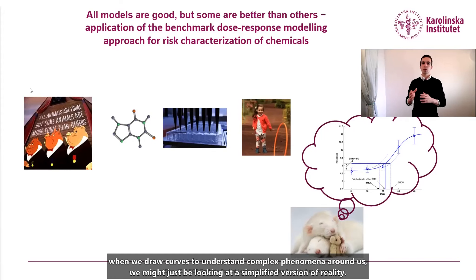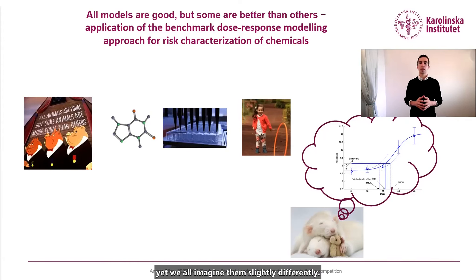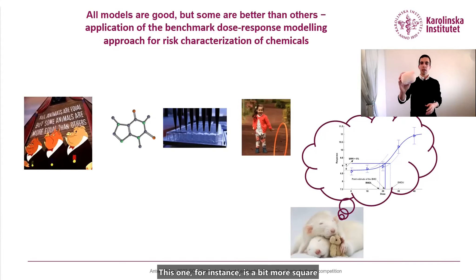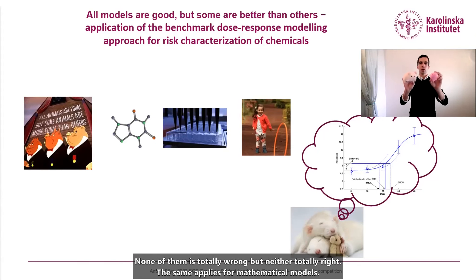When we draw curves to understand complex phenomena around us, we might just be looking at a simplified version of reality. For example, we all know how a pig looks like, yet we all imagine them slightly differently. This one, for instance, is a bit more square, while this one is rounder. None of them is totally wrong, but neither is totally right. The same applies for mathematical models.